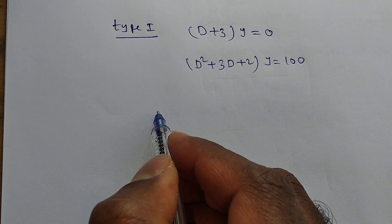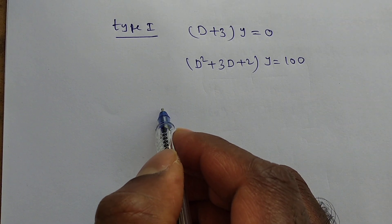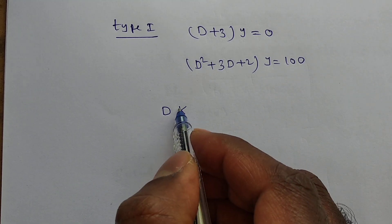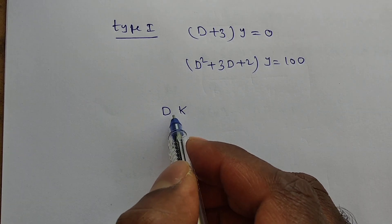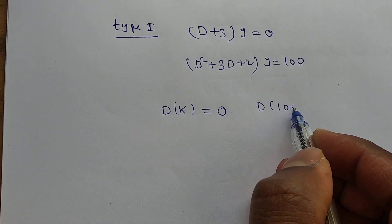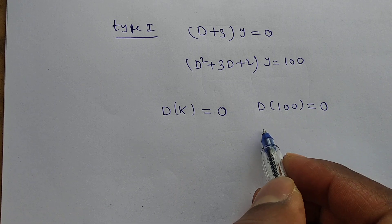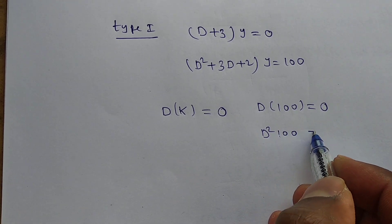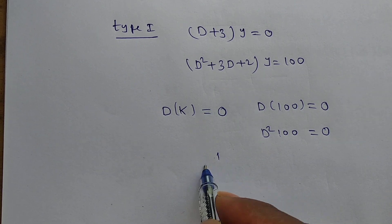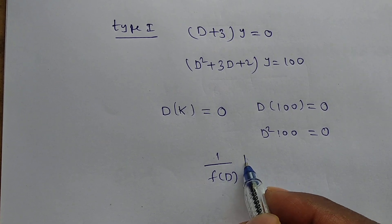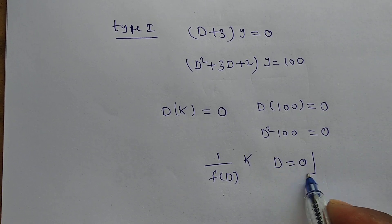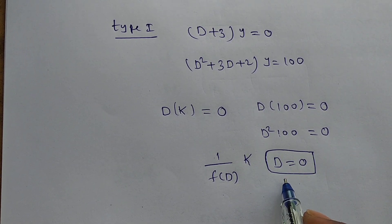Suppose q(x) is a constant. D is called a differential operator, and the derivative of any constant is 0. So the derivative of 100 is 0, and D² of 100 is also 0. To find the particular integral when q(x) is constant, in place of D we replace 0 — this is the shortest method.